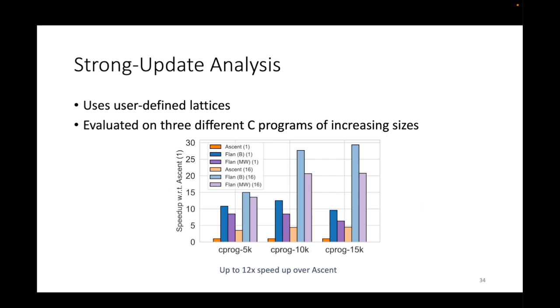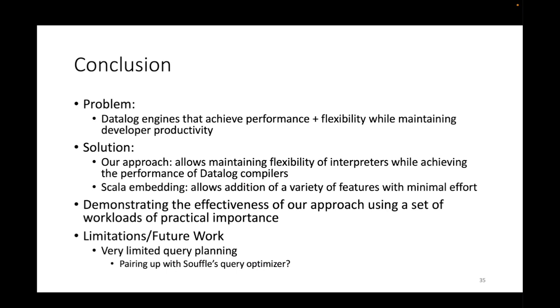In conclusion, we have identified that building Datalog engines that achieve performance plus flexibility while maintaining the developer productivity is a challenging problem. We have demonstrated that our approach allows maintaining the flexibility levels of interpreters while achieving the performance of Datalog compilers. We have shown that our Scala embedding allows additions of a variety of features with minimal effort. In terms of limitations and future work, right now we only do very limited amounts of query planning, so we have plans to extend this with proper query planning mechanisms like cardinality estimates and stuff like that. So thank you all for listening, and thank you.